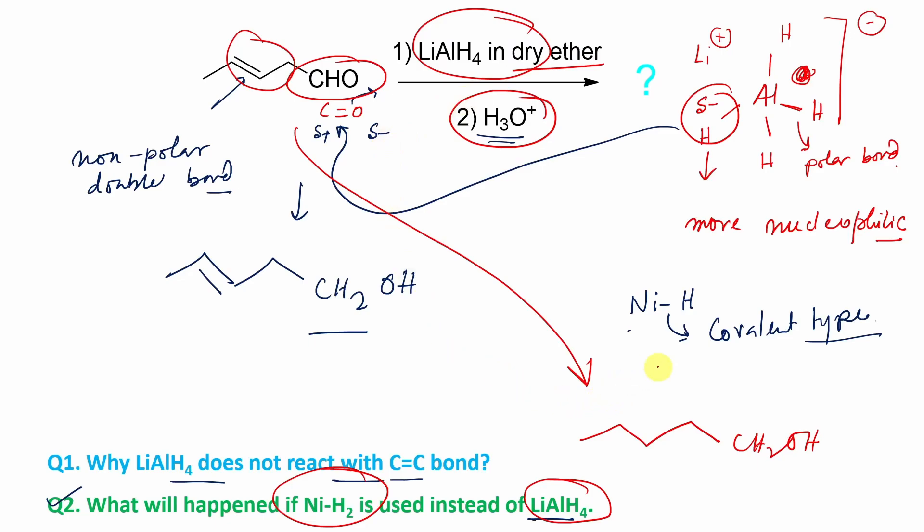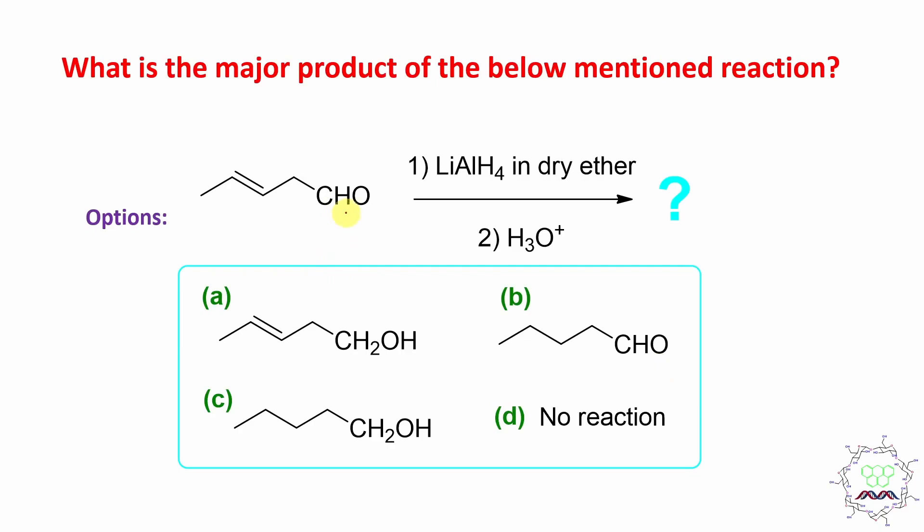So this is the overall discussion. What is the answer of this question? Obviously only this aldehyde will be reduced, double bond intact. Option A is the right answer. Aldehyde double bond cannot be reduced by lithium aluminum hydride, so it is gone. Complete reduction not possible, gone. No reaction, that's also wrong, reaction will happen.